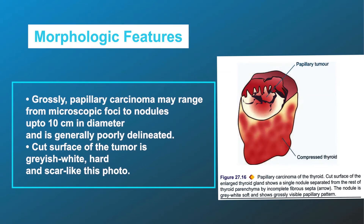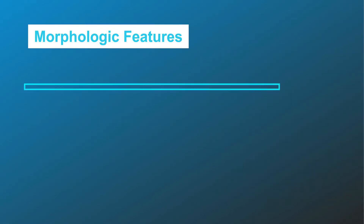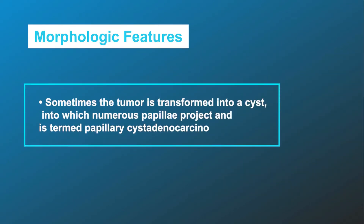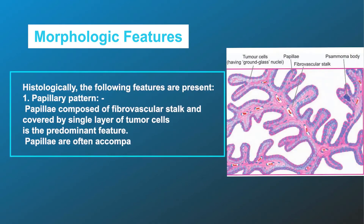Regarding morphologic features: grossly, papillary carcinoma may range from microscopic foci to nodules up to 10 centimeters in diameter and is generally poorly delineated. The cut surface of the tumor is grayish white, hard, and scar-like. Sometimes the tumor is transformed into a cyst into which numerous papillae project, and is termed papillary cystadenocarcinoma.